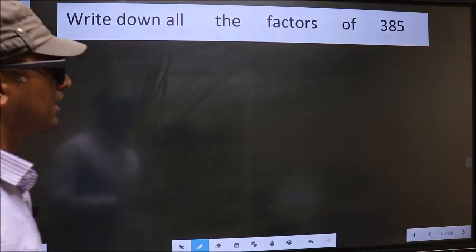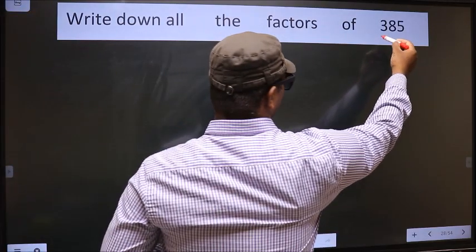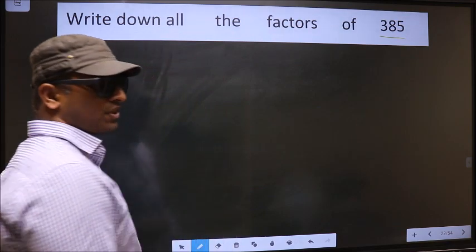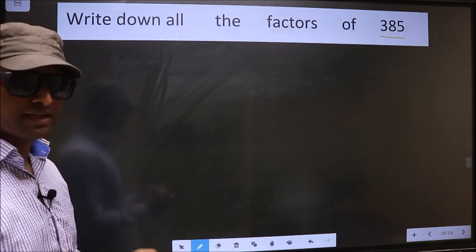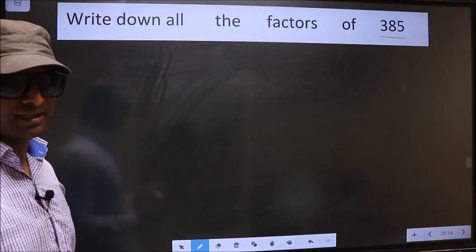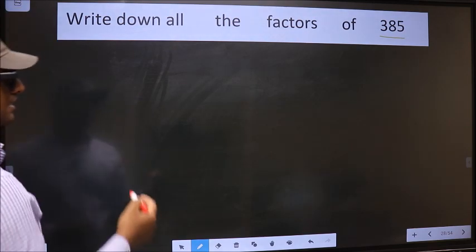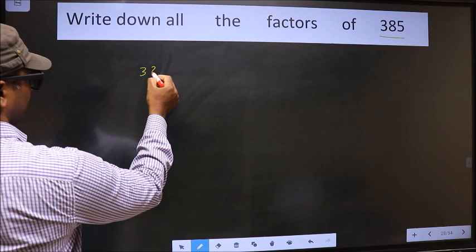Write down all the factors of 385. To write all the factors, first we should do the prime factorization of it, that is 385.